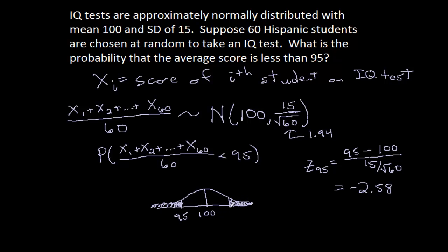And the way that we find this area, actually I want to do that in a different color. I've got all these colors up here at my disposal, why not use them? We can find this area by finding the area to the left of it and subtracting from 1. So for this value, z is 2.58.